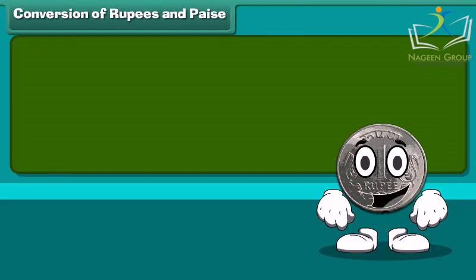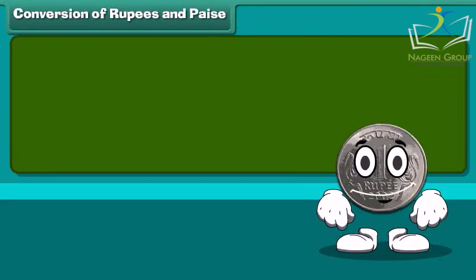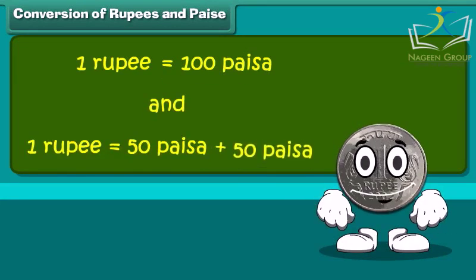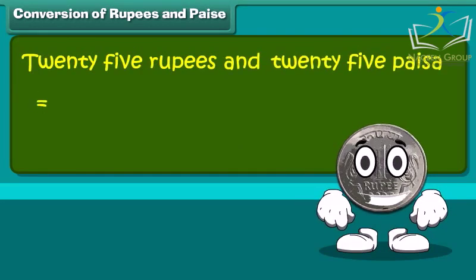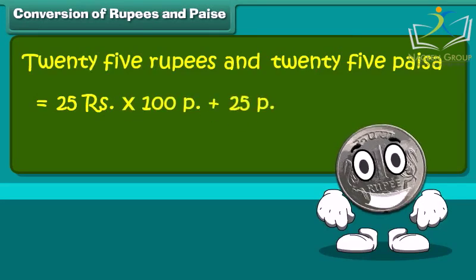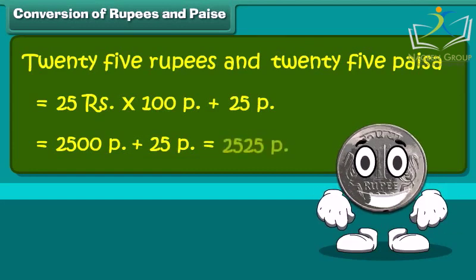We start with conversion of rupee to paisa and vice versa. 1 rupee is equal to 100 paisa. 25 rupees and 25 paisa is equal to 25 multiplied by 100 plus 25 paisa. This becomes 2500 plus 25 paisa, which we can say is 2525 paisa.